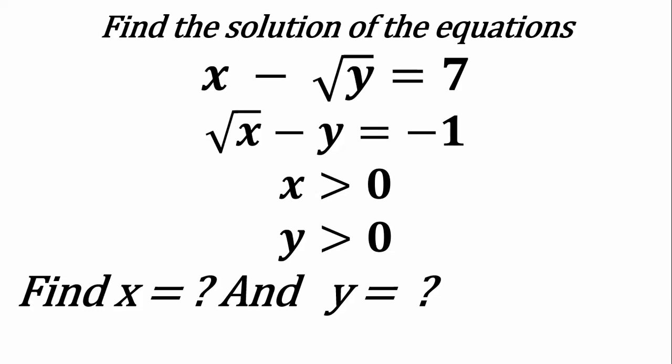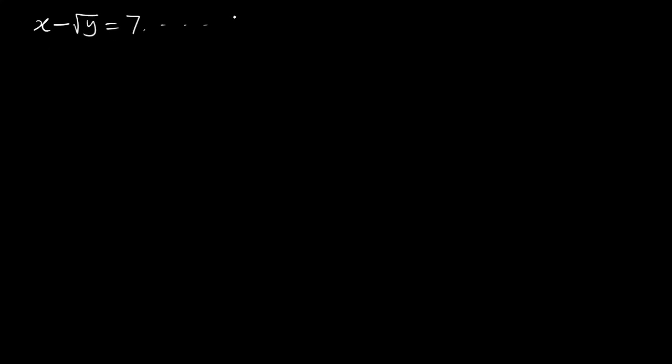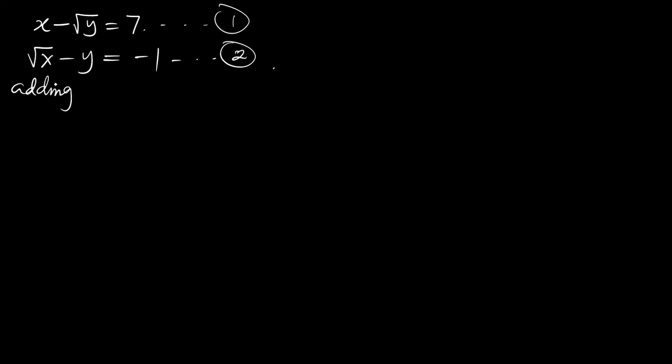Good day all. This video is all about finding the new value of x and y. Now let's begin. You have x minus the square root of y equal to 7, equation 1. Then the square root of x minus y equal to minus 1, equation 2.